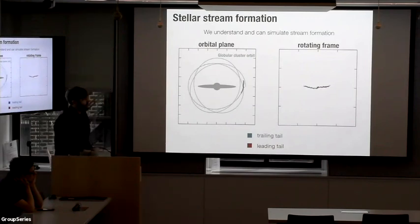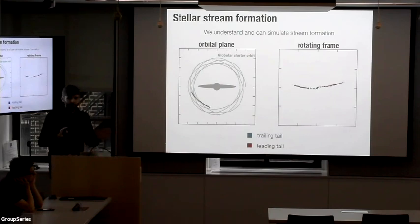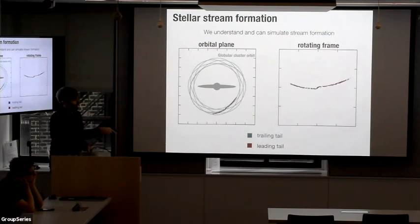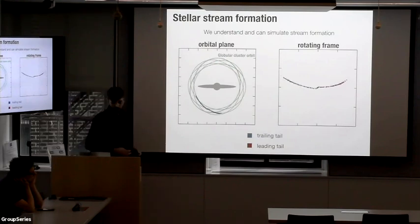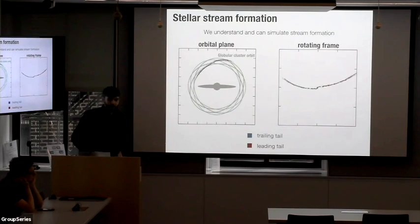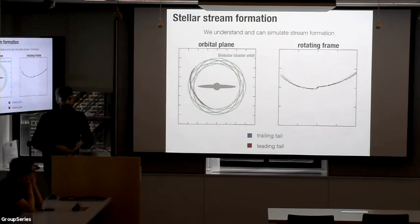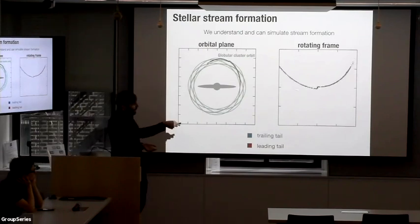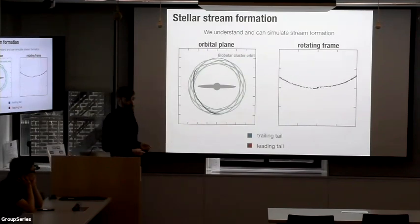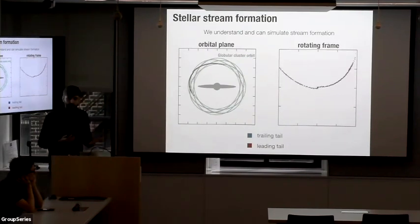I'm showing an N-body simulation here of a globular cluster-mass object orbiting around a very toy Milky Way — looking at the rotating frame and in the frame of the Milky Way. From an observed stream, like if we stopped this and looked at a bunch of stars, we can estimate its intrinsic properties like the age or mass of the stream. And from the track of the stream, we get information about the orbit of the progenitor, which is not something we typically get access to in galactic dynamics.